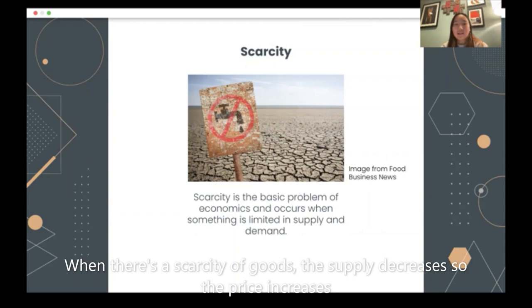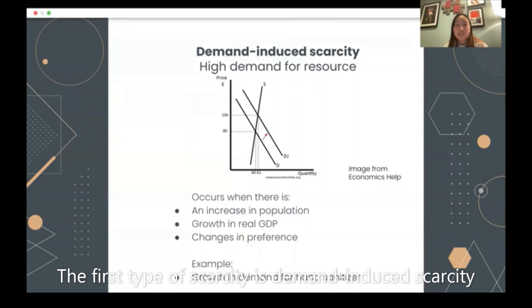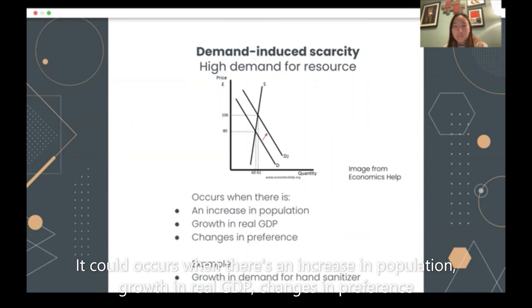When there is a scarcity of goods, the supply decreases so the price increases. The first type of scarcity is demand-induced scarcity. It occurs when there is a high demand for a resource. This can occur when there is an increase in population, growth in real GDP, or changes in preference.